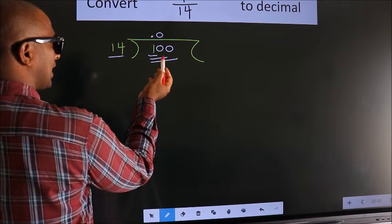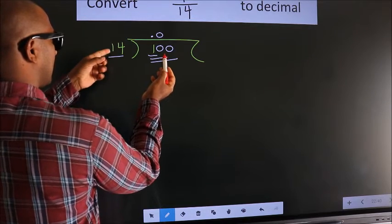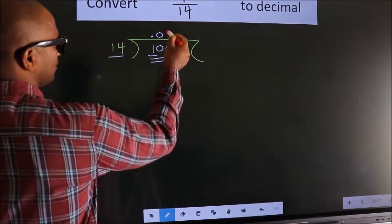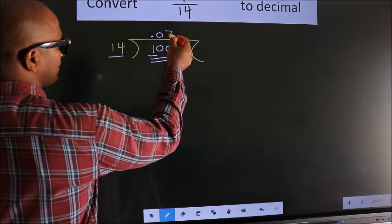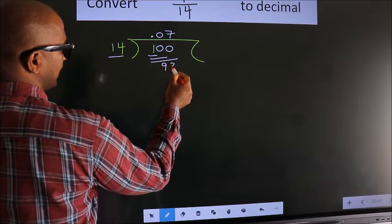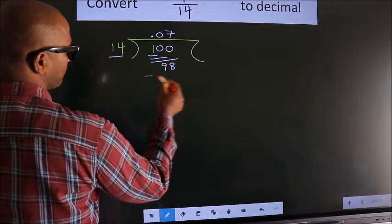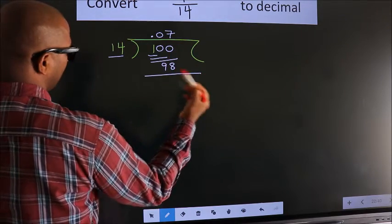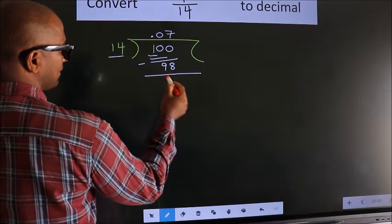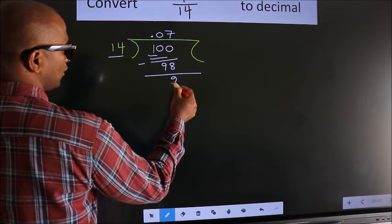A number close to 100 in the 14 table is 14 sevens, 98. Now we subtract and we get 2.